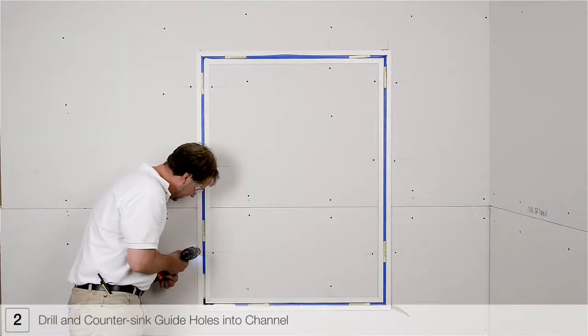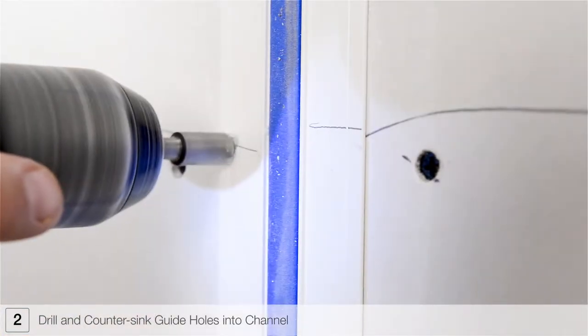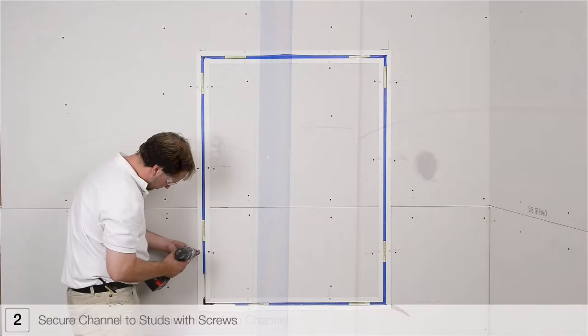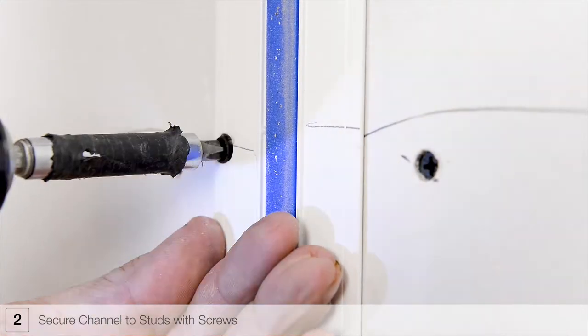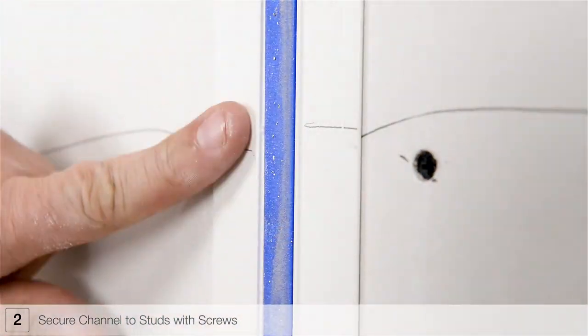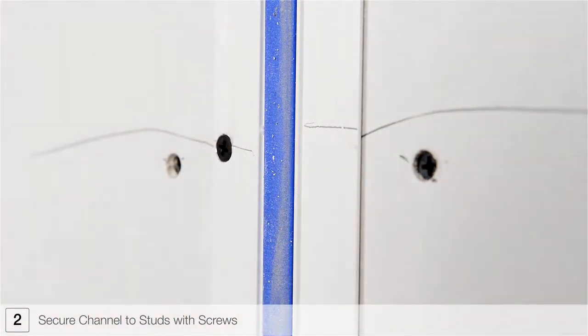Drill and countersink guide holes using the stud markings from previous steps. Secure the picture frame assembly to the drywall and mounting straps using drywall screws. Make sure each screw head is flush with the channel surface before continuing.